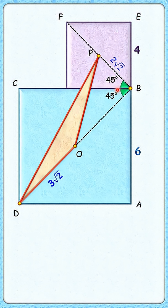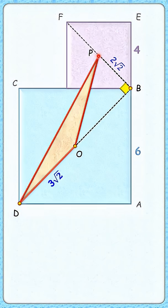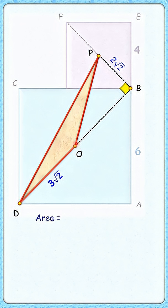And here comes the magic: with respect to this brown triangle, PB is the height for base length DO. Thus, the area of the triangle is half of base times height. Solving it, we get the area of this triangle as 6 square centimeters, and that's our answer.